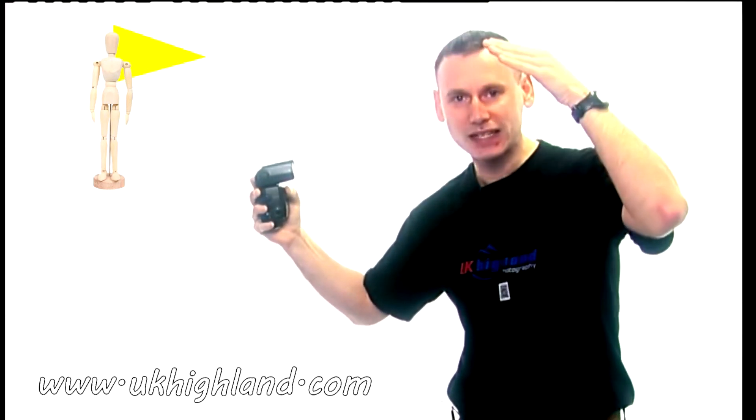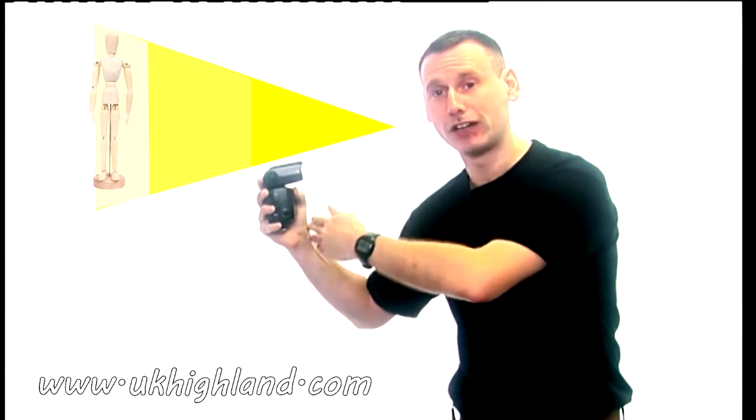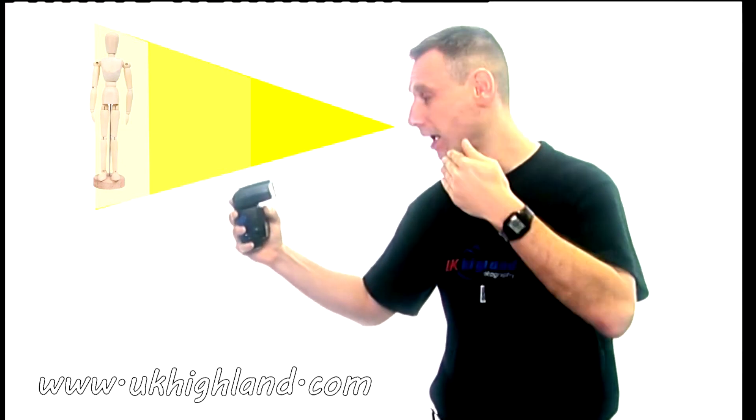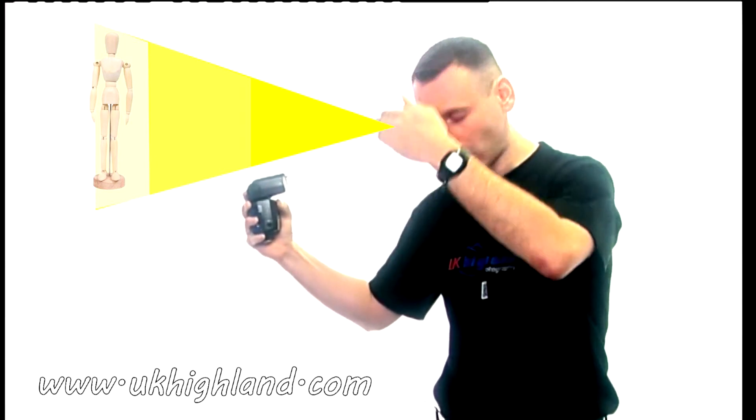So in order to illuminate my entire body, what I have to do is I have to move either the flash away from me or I have to move myself away from the flash. Either way, I need to put distance in between me and the flash in order to illuminate my entire body.